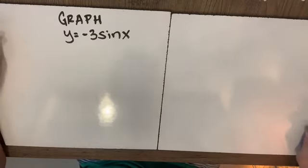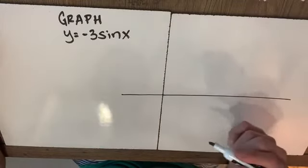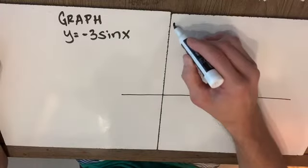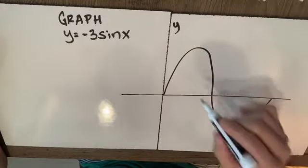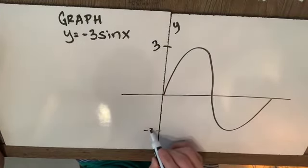If we're asked to graph y equals negative 3 sine x, well we could start by graphing y equals 3 sine x. We know that if this is our y axis here that we're going to have this classic 0 max 0 min 0 and we're going to go up to 3 and down to negative 3.